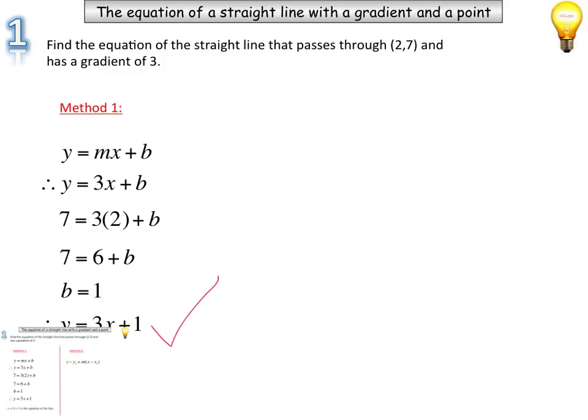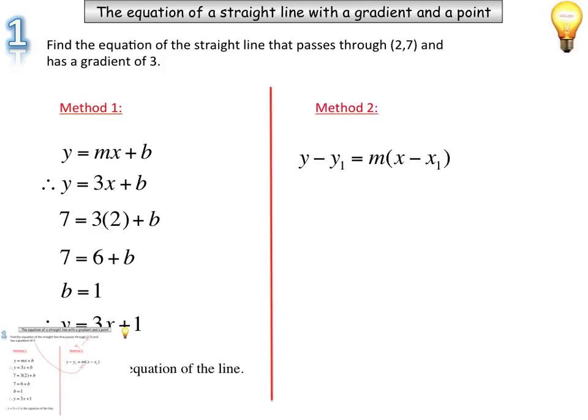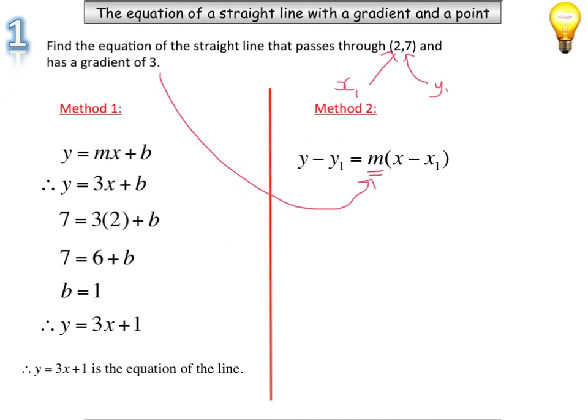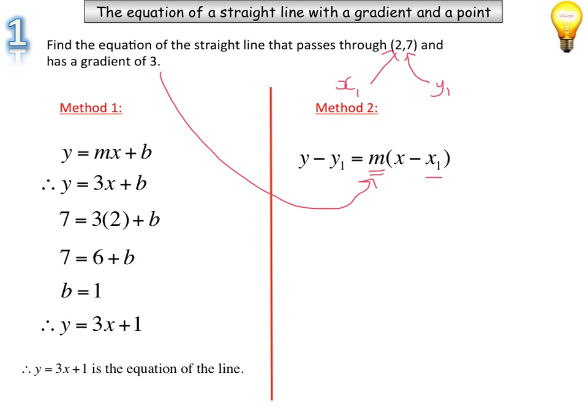So from here, I substitute my gradient into that particular part. That is my x1, that is my y1, and that's where I substitute those values in. So y minus 7 equals 3 brackets x minus 2.